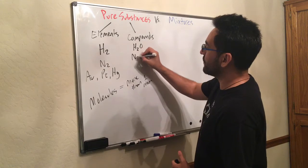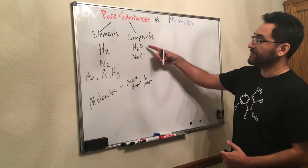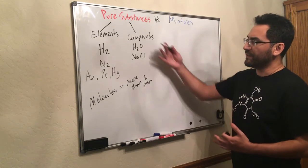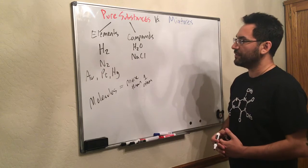Or sodium chloride, salt. This is an ionic compound. This is a molecular compound. We'll talk about the difference between molecular and ionic compounds in a later video.